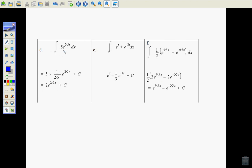With d, we can see that we've got 5 times e to the power of 2.5. So the 5 would be multiplied by 1 over 2.5, e to the power of 2.5x, which gives us 2 e to the 2.5x plus the constant. Try not to forget your constant every time.